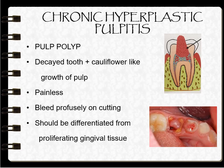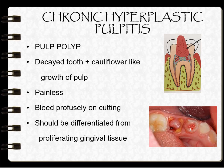Next is chronic hyperplastic pulpitis, also called pulp polyp. In this case, you can observe decayed teeth along with a cauliflower-like growth of the pulp. A mass arises from the pulp, this is painless, and on trying to cut it, it bleeds profusely. Pulp polyp must be differentiated from proliferating gingival tissue, which can be done using a probe or excavator to determine whether the mass is arising from the gingiva or from the pulp.